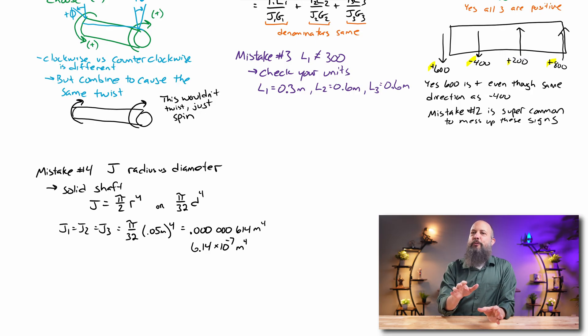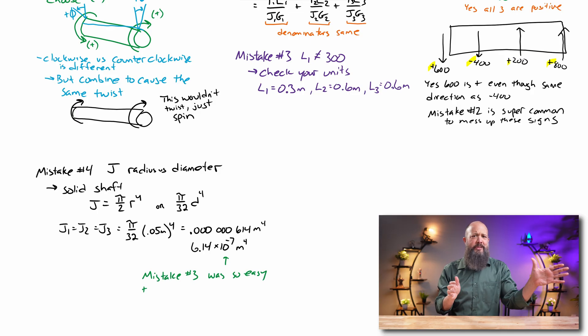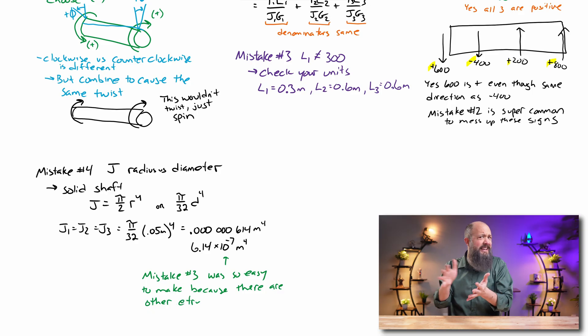And now you can see why mistake number three was really easy to make, having the wrong units for length. Because when you've got other terms with like a 10 to the minus 7, it's really easy to be off by a factor of 1,000, and you might not actually even notice until you get to the very end.